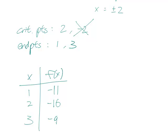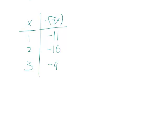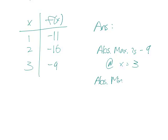And now we look at this table, and the largest y value is minus 9, so the absolute max on this interval is minus 9, and it occurs at x equals 3. And the smallest one is minus 16, and that occurs at x equals 2.